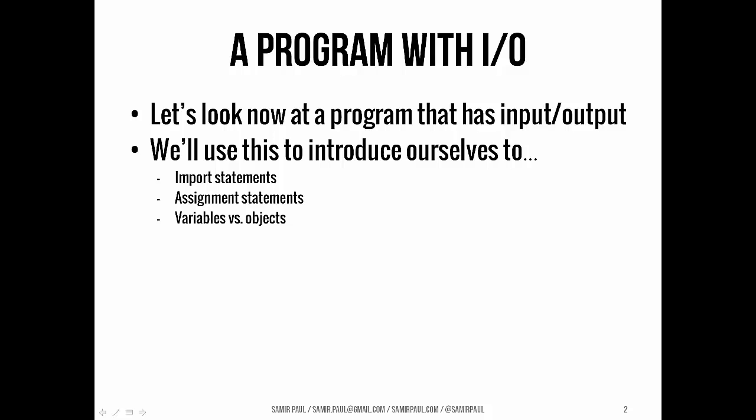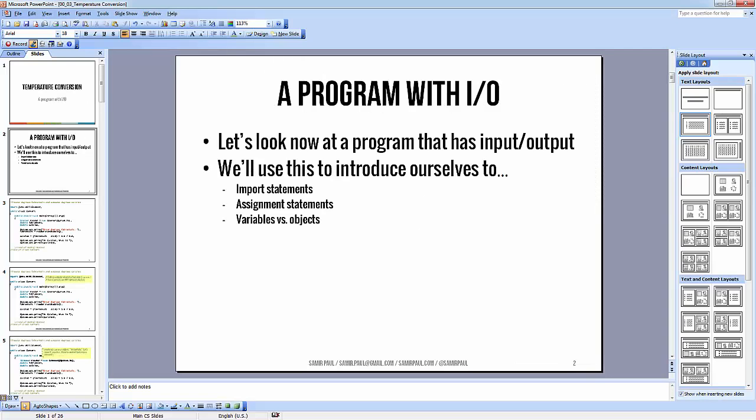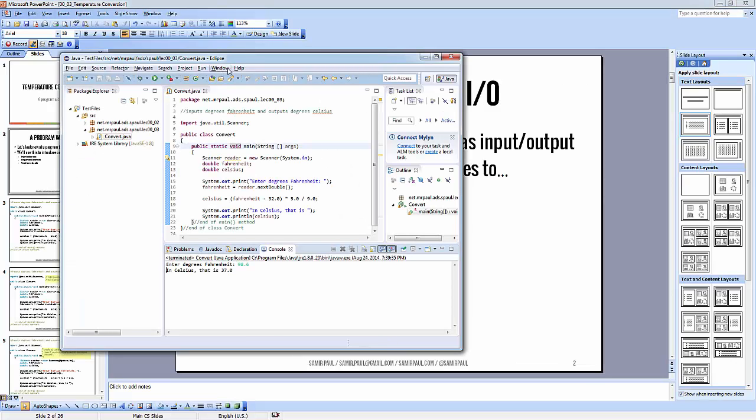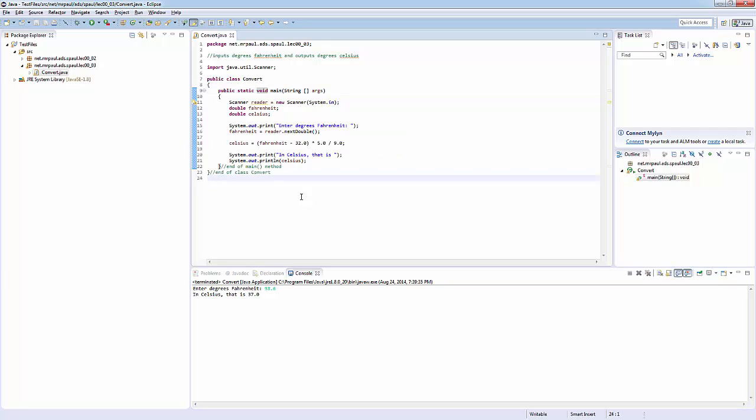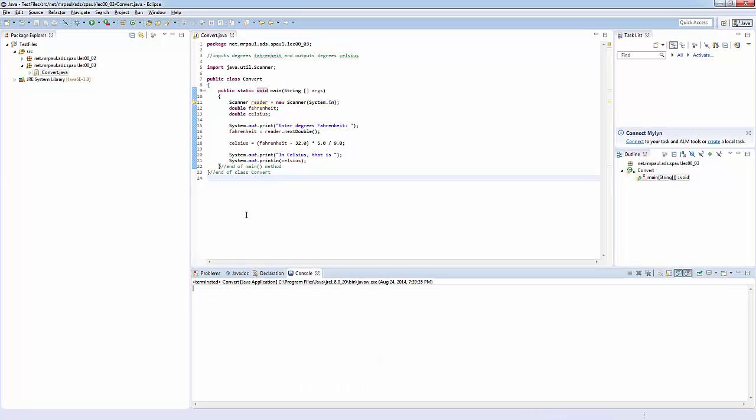A couple of those are importing classes that other people have written from different packages. We're going to talk about assignment statements. We're going to talk about variables and objects. But first, before we do anything, let's actually just stop and look at the program. This code is on the class website. You can download it, pull it into Eclipse by importing it into a new package, and then you can actually run it. So let's actually take a look real quick and see what happens when we do run this.